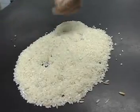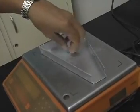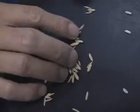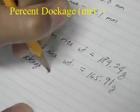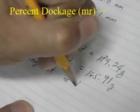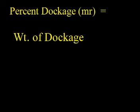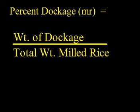For the dockage, select, segregate, and weigh the foreign matter. Next, record the number of unhulled grains collected from the sample. Then determine the percentage of dockage of milled rice using the equation: the weight of dockage divided by the total weight of milled rice, then multiplied by 100.